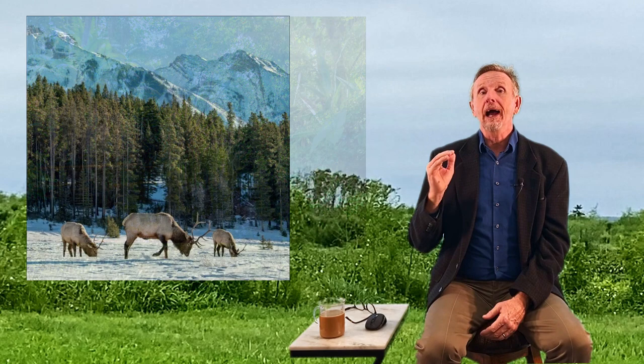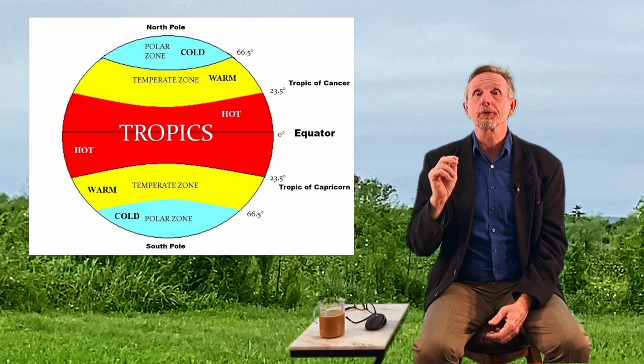In the low latitudes, basically zero to 30, we have the tropics. From 30 to 60 is the temperate zone, and from 60 up is the Arctic or cold region. So we have tropical, temperate, and cold — and that doesn't matter whether you're going north or south.